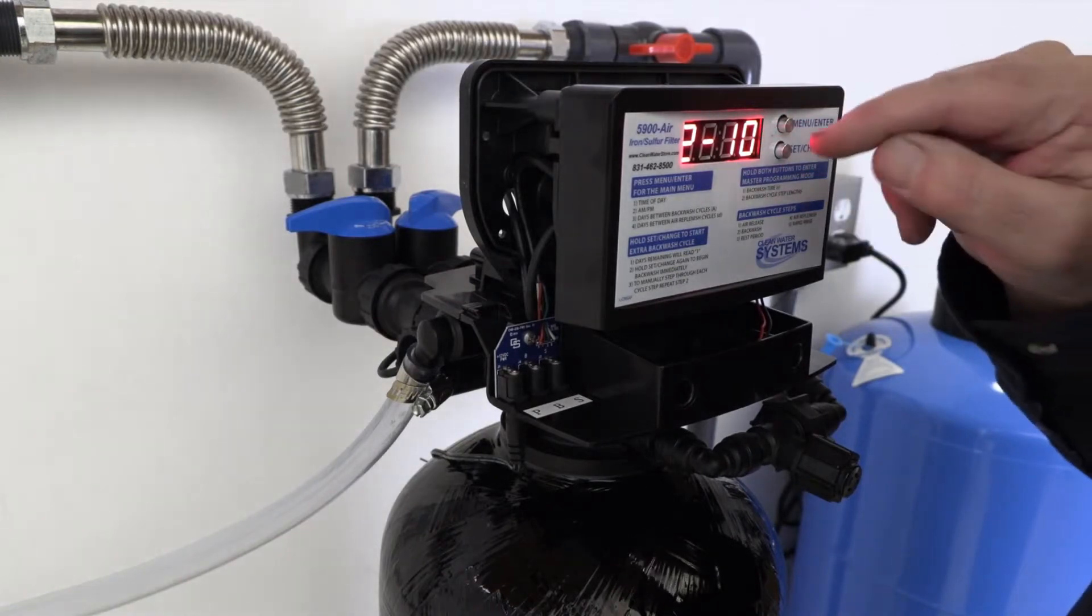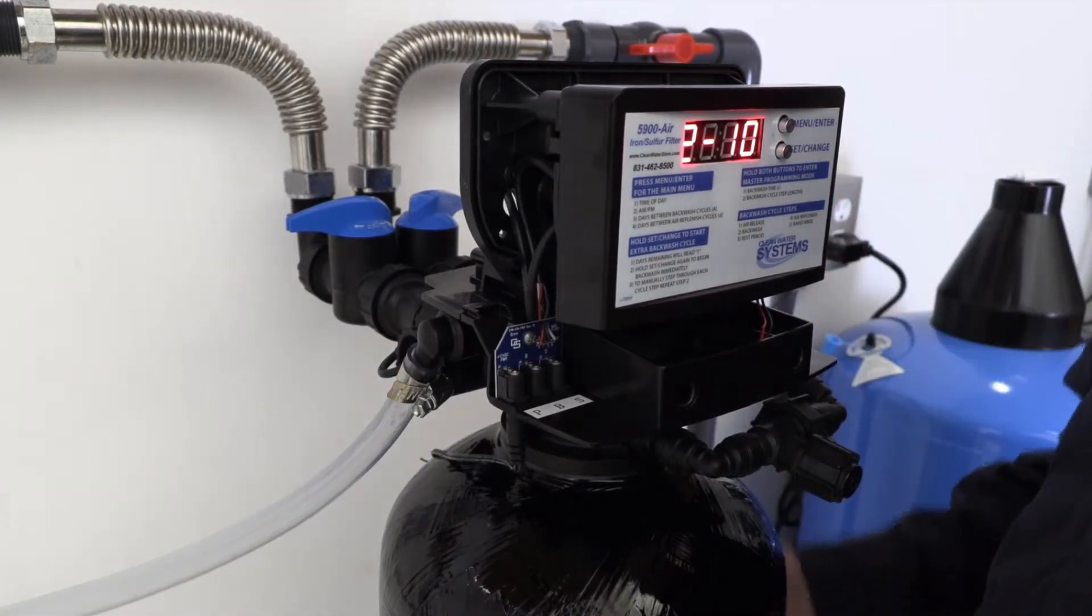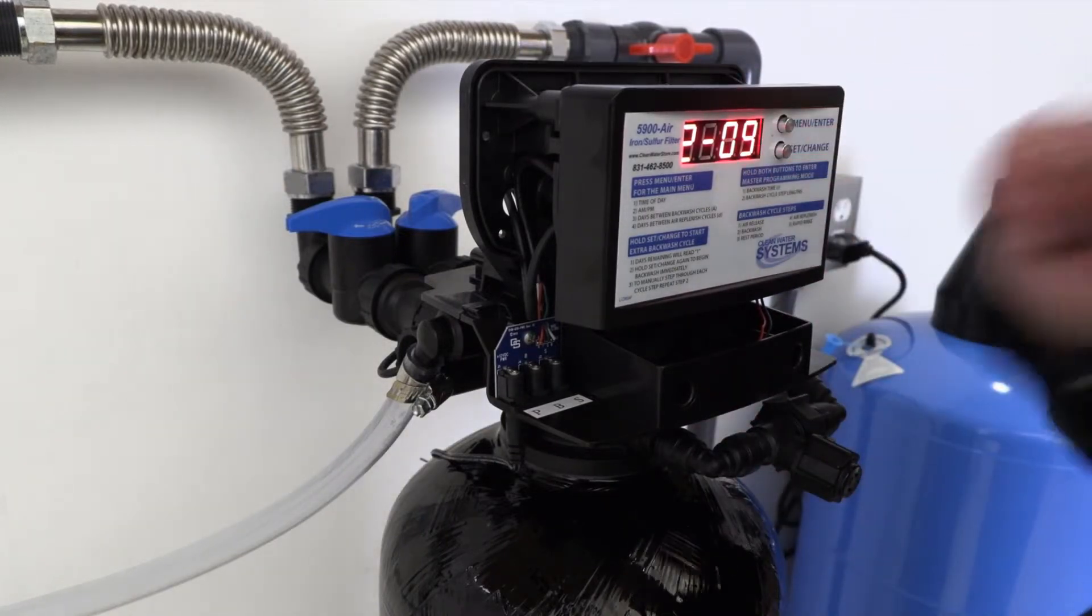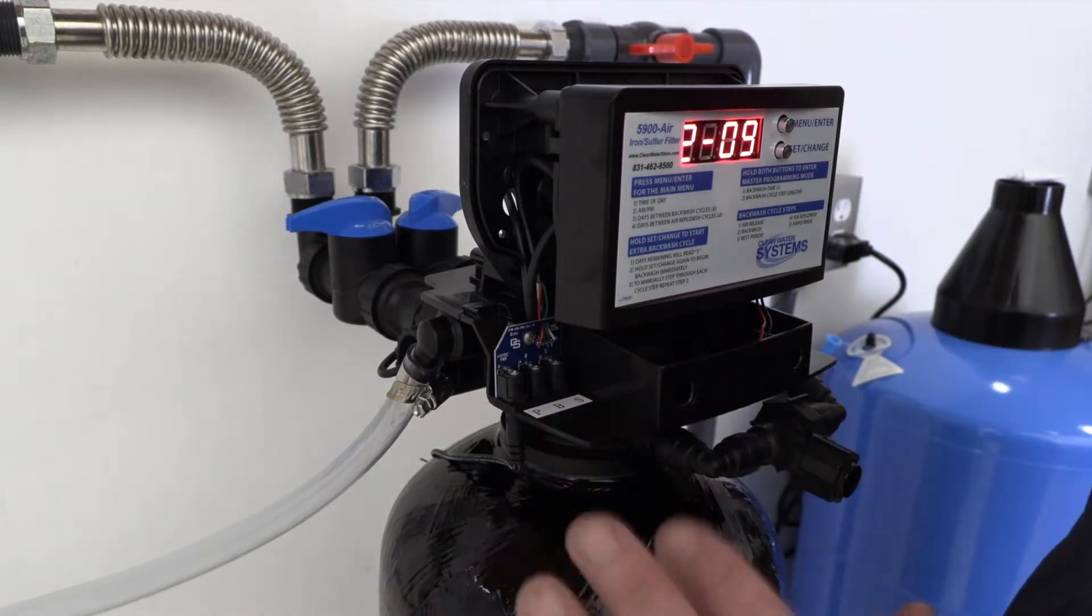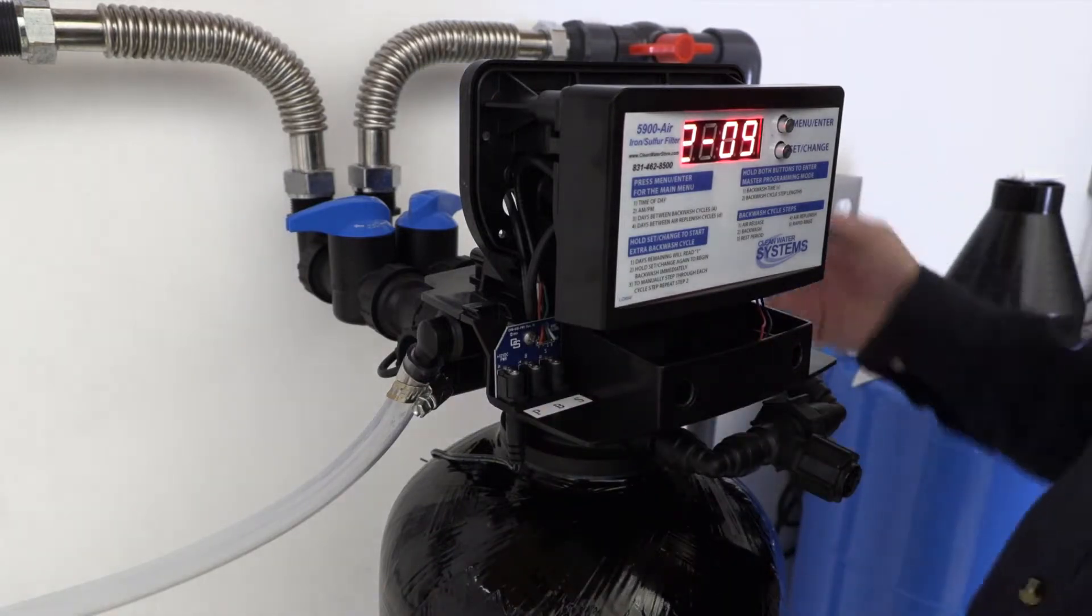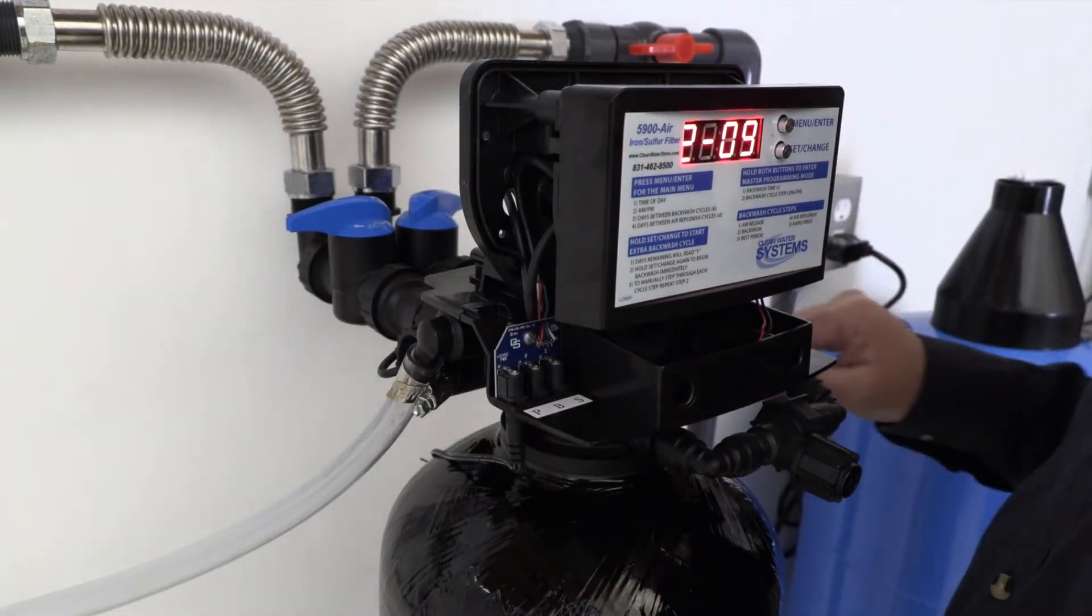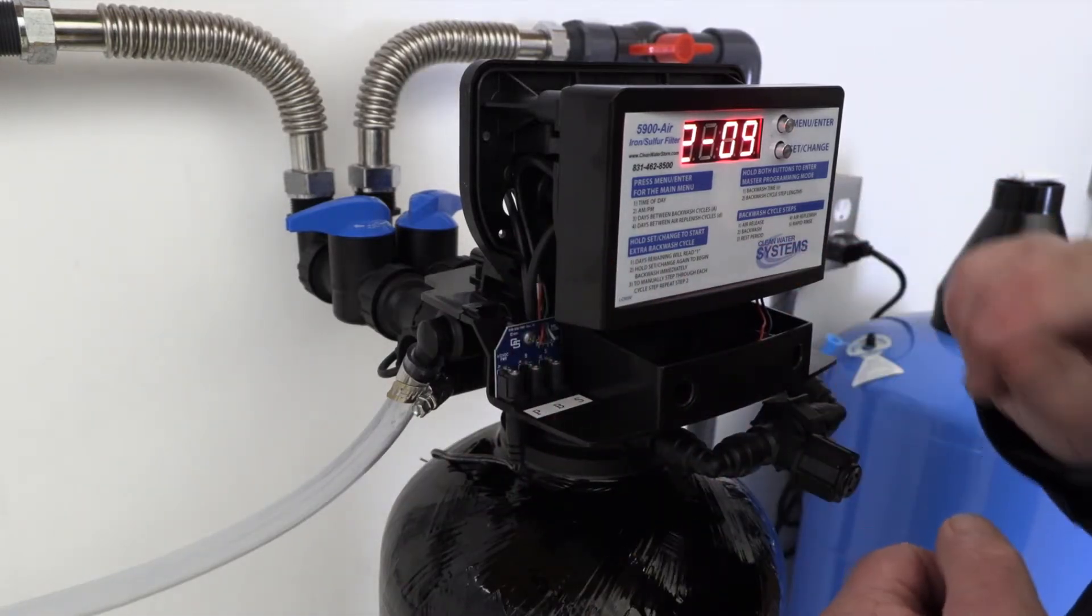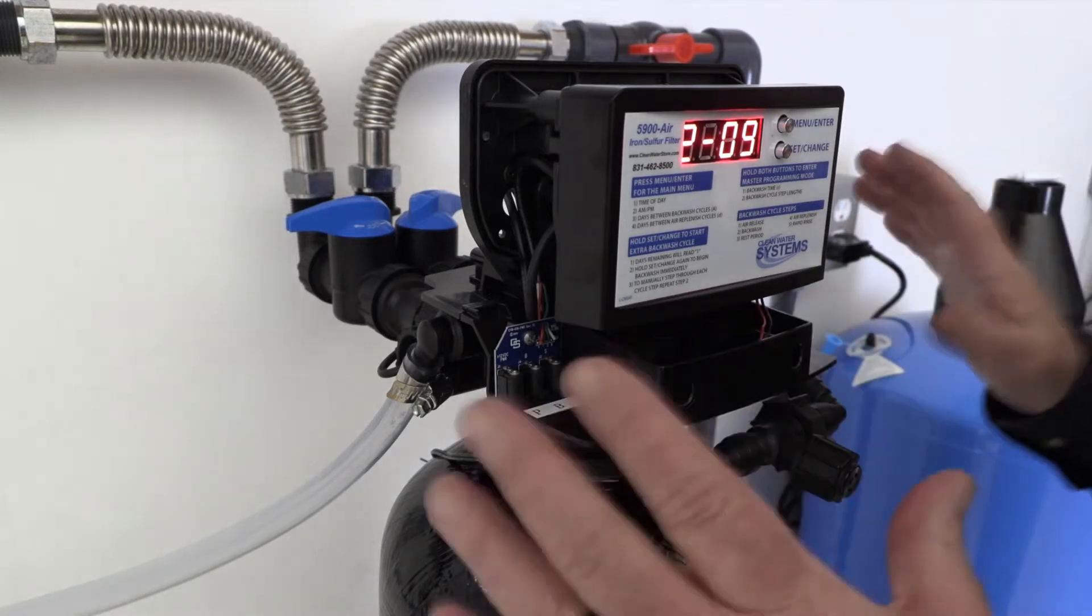Different size tanks take different amounts of time. What we would suggest is when this gets down to about three or four minutes, unplug the valve and make it stay there. You don't want to go into the rest period step three or the air replenish step four for this first cycle.